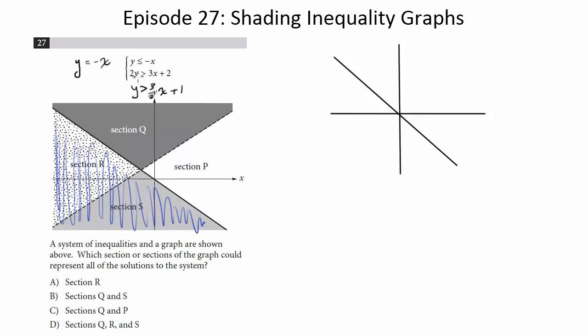So we know this line is gonna be our second guy. And it's greater than in this case. And when it's greater than, you shade above the line. So I'm gonna shade above this line.